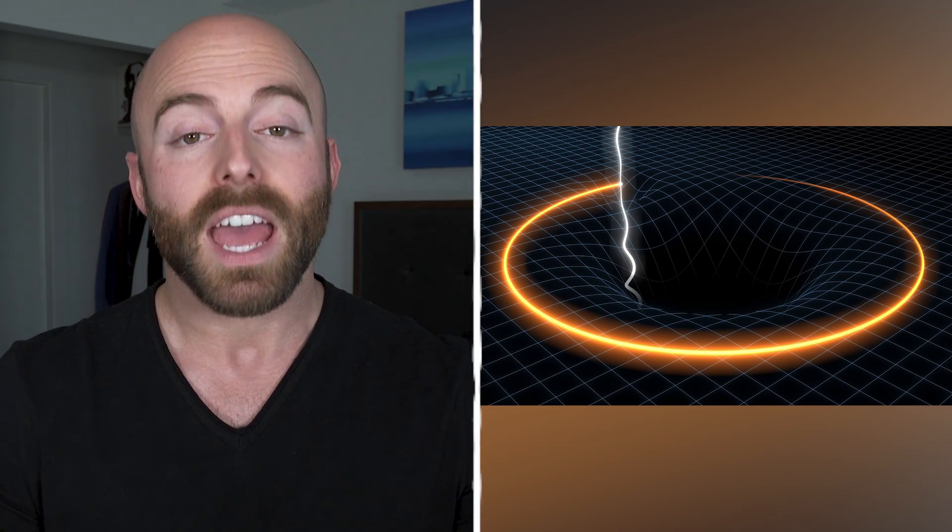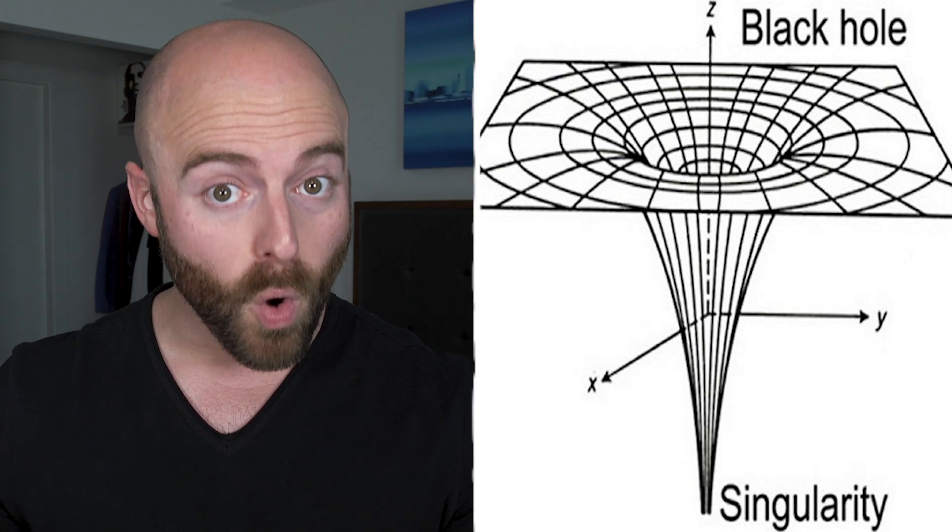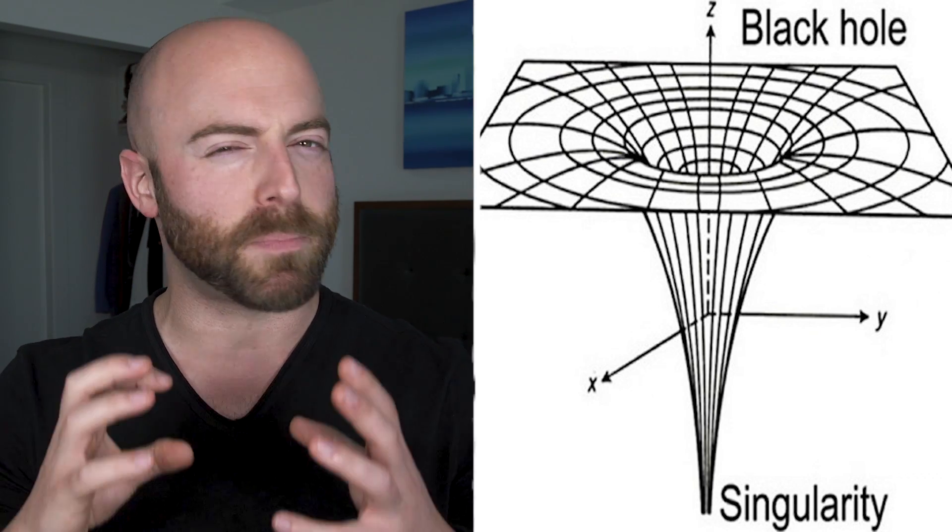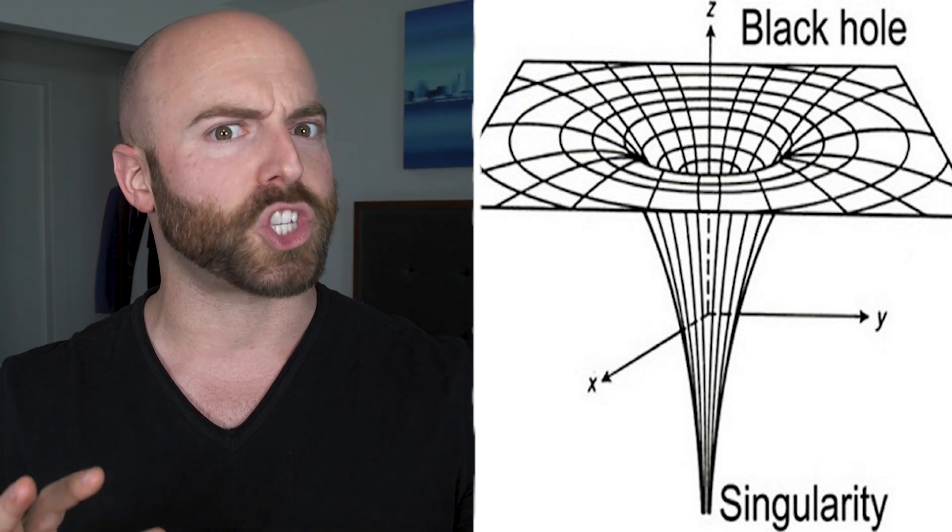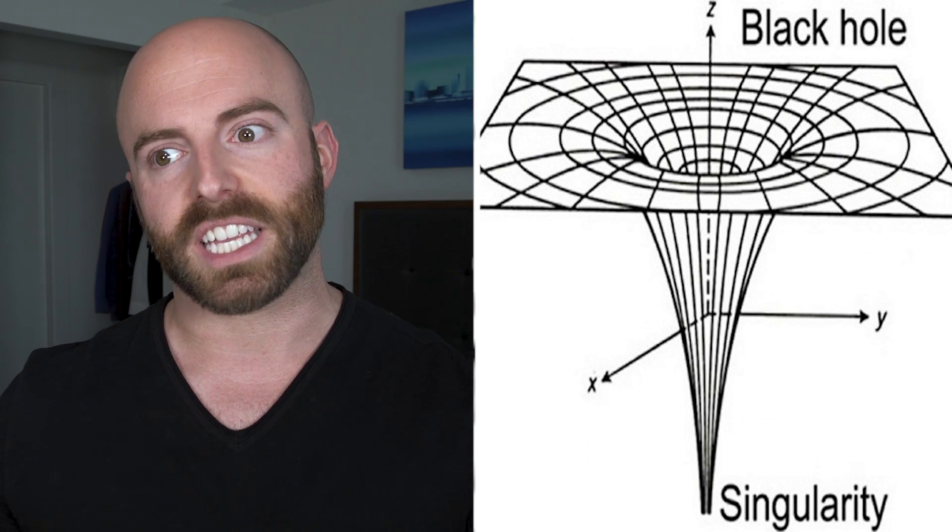In non-rotating black holes, the singularity is depicted as a single point, whereas in rotating black holes, physicists believe that it resembles a ring. But because space and time have broken down, singularities possess bizarre properties, which lead to strange paradoxes, which we'll get to in a moment.